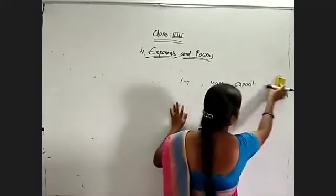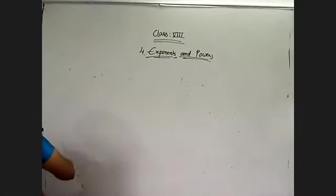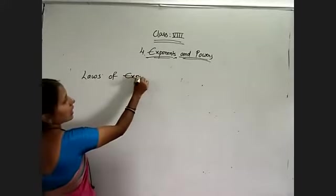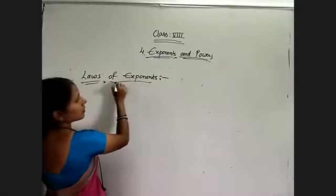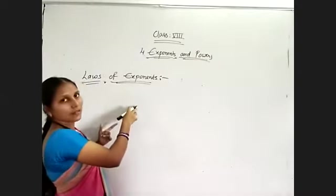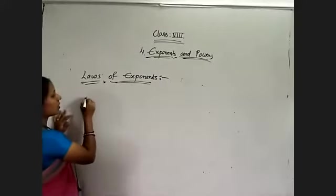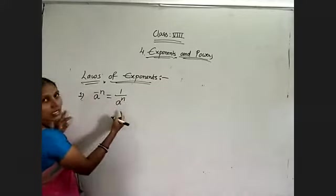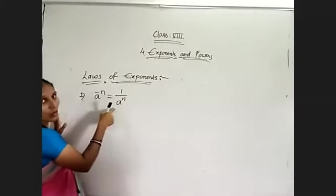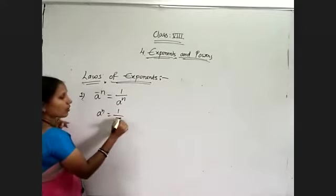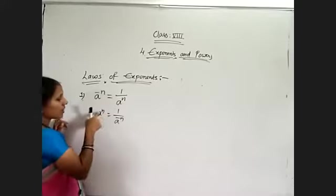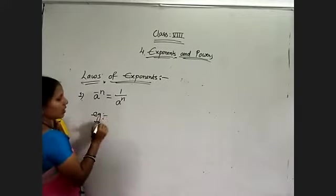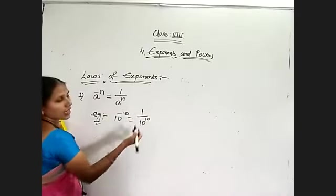So I am giving the laws of exponents. Whenever we get exponents in the denominator, we use negative exponents for simplifying. My first law: negative exponents — we make them positive by taking them into the denominator. If I have a power n in the numerator, then 1 by a to the power of minus n. If minus it becomes plus, if plus it becomes minus. For example: 10 to the power of minus 10 equals 1 by 10 to the power of 10.